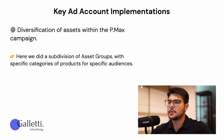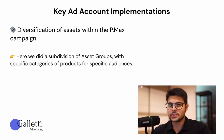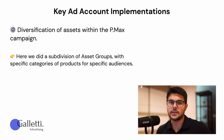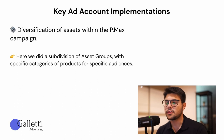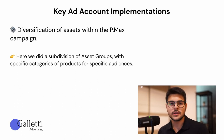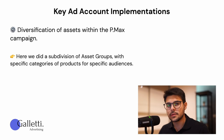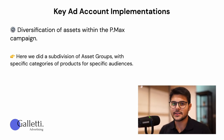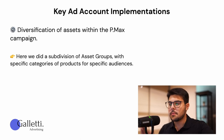The second key implementation is diversification of assets within the PMX campaign. When we started working with them, they had only one Performance Max campaign with one asset group, which is not ideal as campaigns develop. We did a subdivision of asset groups with specific product categories for specific audiences. This brand has a variety of categories, and each customer is looking for something different, so we broke the campaign down into subdivisions — each asset group focused on one product category, with images, pictures, and headlines all optimized around it, making the campaign much more precise.